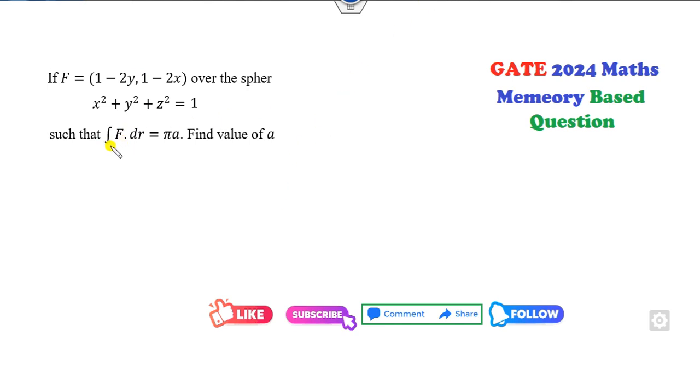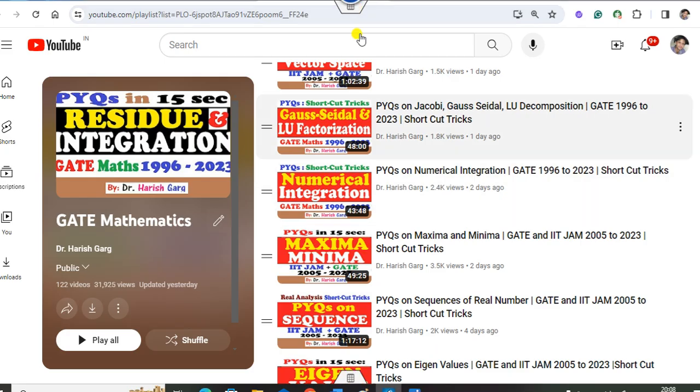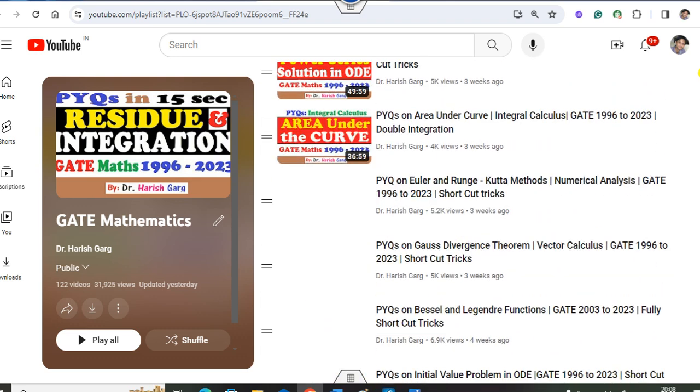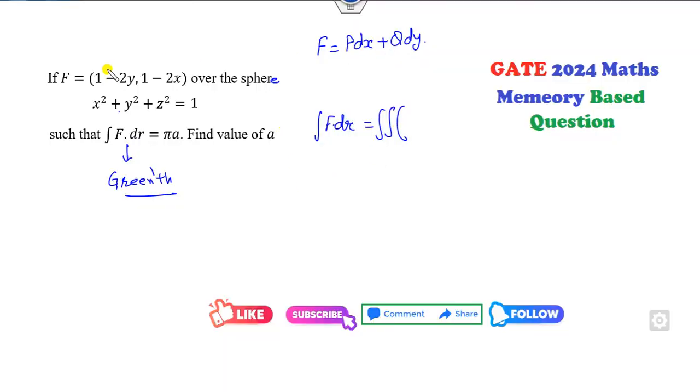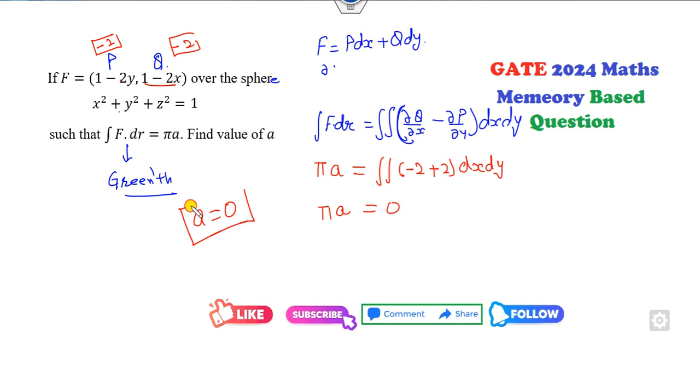Now look at this one, a line integral over the sphere. Which result have I told you? Green's theorem. You can always convert this: if your f will be p dx plus q dy. The same question appears in my playlist. If you look at the Green theorem lecture available in this playlist, you can find it. What is p? This is p. This is q. This will be del q by del x minus del p by del y. So left hand side is pi of a. What is del q by del x? It is minus 2. It is minus 2 again. So this is double integration minus 2 plus 2. The answer is 0. So pi of a is 0, so a will be 0 is the right answer.